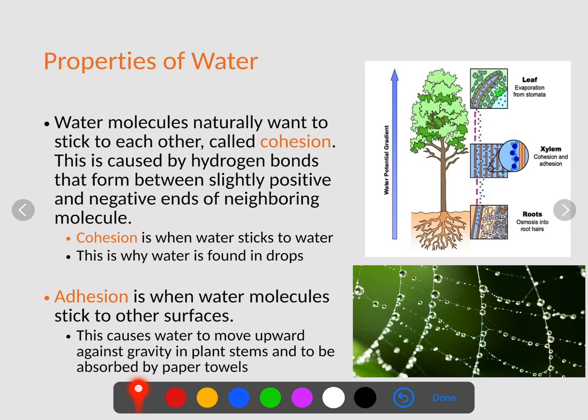Now adhesion is when water molecules stick to other surfaces. Adhesion is very important because this causes water to move upward against gravity in plant stems and to be absorbed by a paper towel. So without this adhesion property, water wouldn't be able to get up to the leaves to perform photosynthesis. When water comes through the leaves, it's able to bind to these xylem that allow it to climb up the plant and get to the leaves so that it can be used. So adhesion and cohesion is when water has this adhesive property, they can stick to one another.